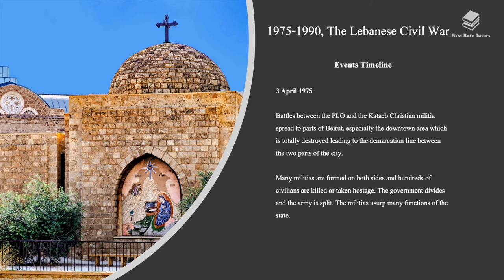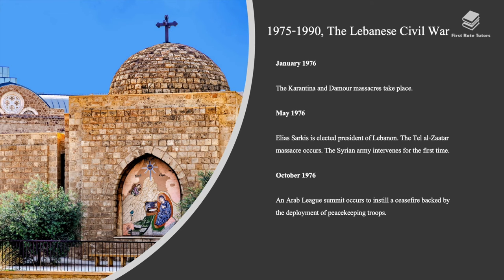In April 1975, battles between the PLO and the Maronite Christian militia spread to parts of Beirut, especially the downtown area, which was totally destroyed, leading to the demarcation line between the two parts of the city. Many militias were formed on both sides and hundreds of civilians were killed or taken hostage. The government divided and the army split. The militias usurped many functions of the state. In January 1976, the Karantina and Damour massacres took place.